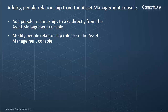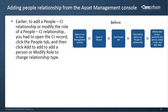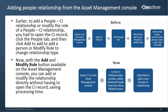Also new on the Asset Management Console is the option to add CI people relationships and to modify the relationship role. Earlier, to add a people CI relationship or to modify the role of a people CI relationship, you had to open the CI record, click the People tab, and then click Add to add a person. Now with the Add and Modify Role button available on the Asset Management Console, you can add or modify the relationship directly without having to open the CI record, saving processing time.